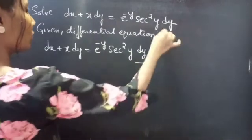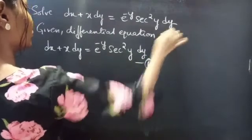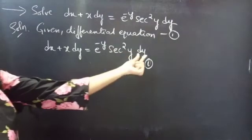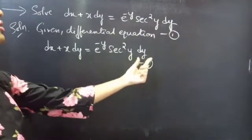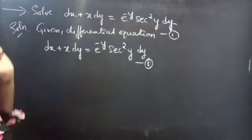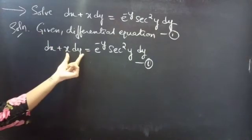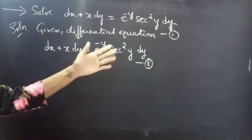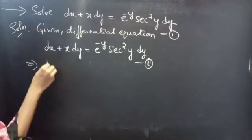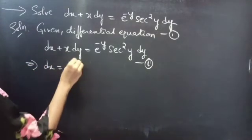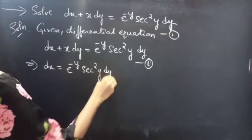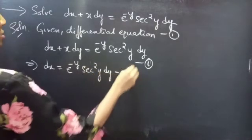Consider the given equation. If you notice, you have the differential dy — the term involving differential dy in the RHS. So what we will do is take this term involving differential dy to the RHS. Then dx equals to e power minus y secant square y dy minus x dy.